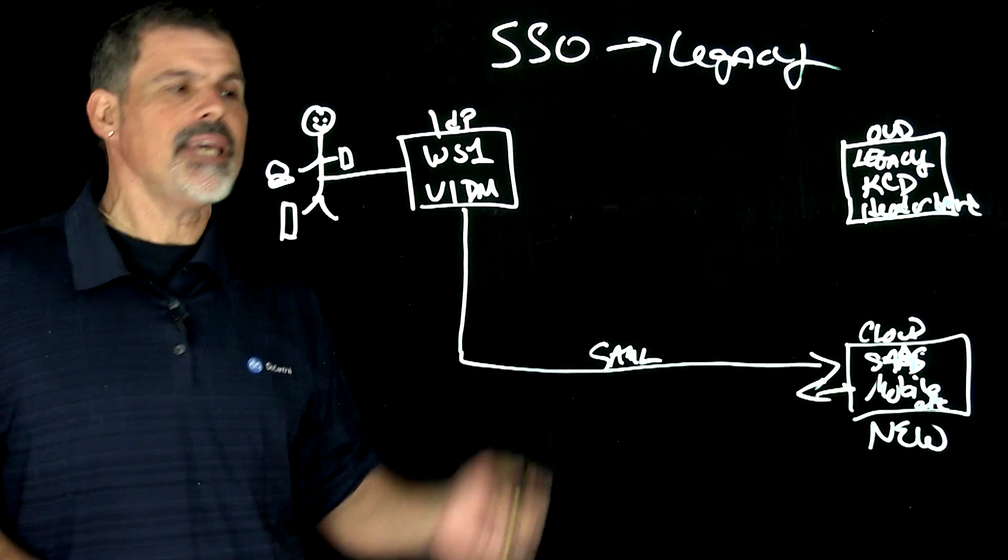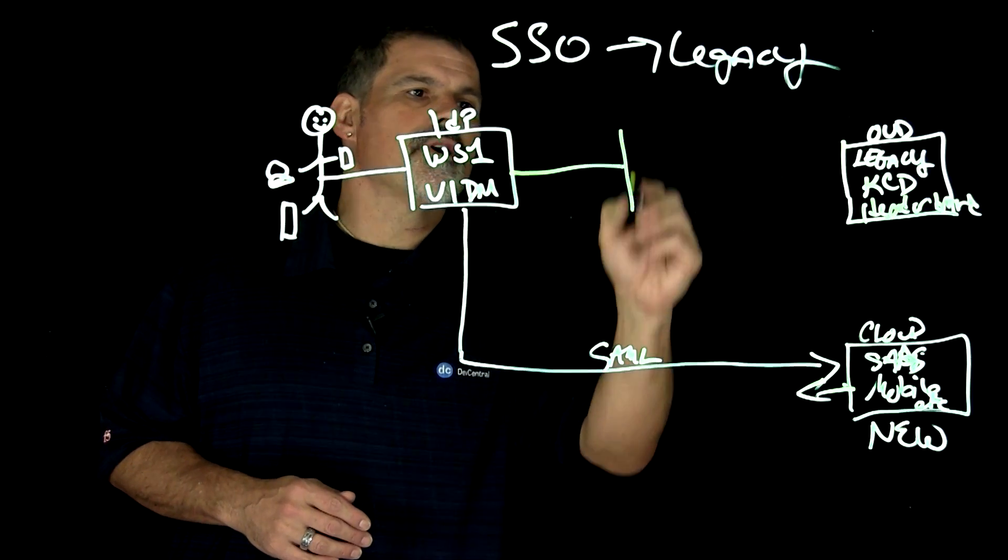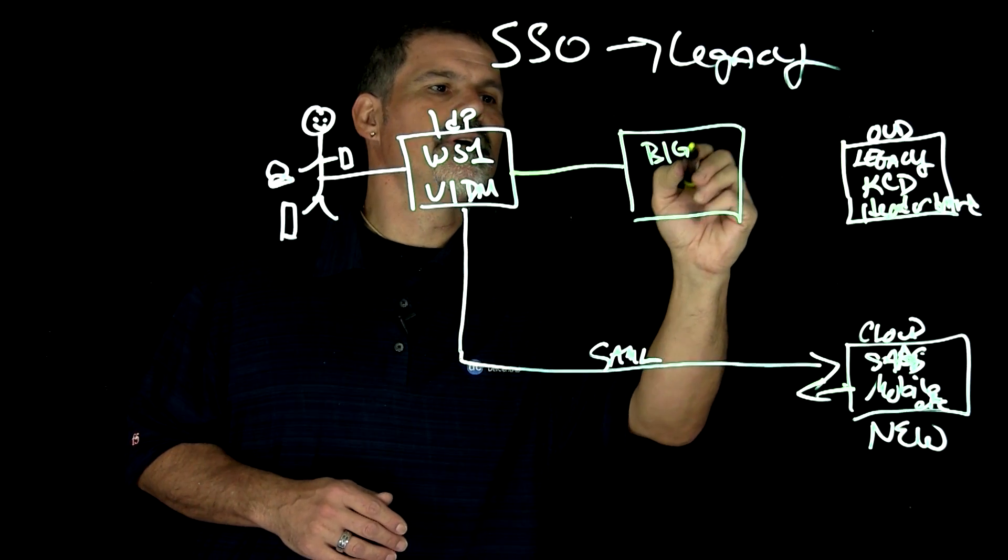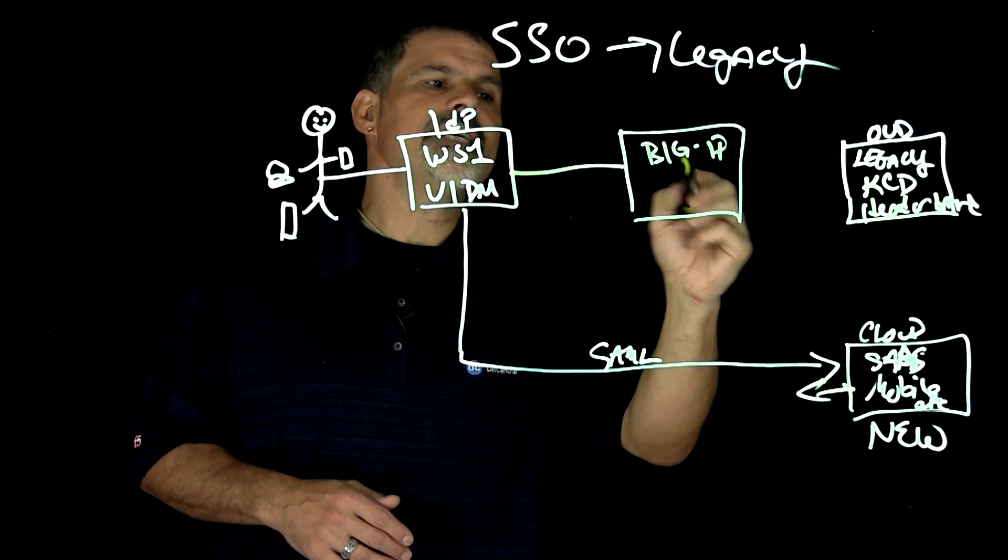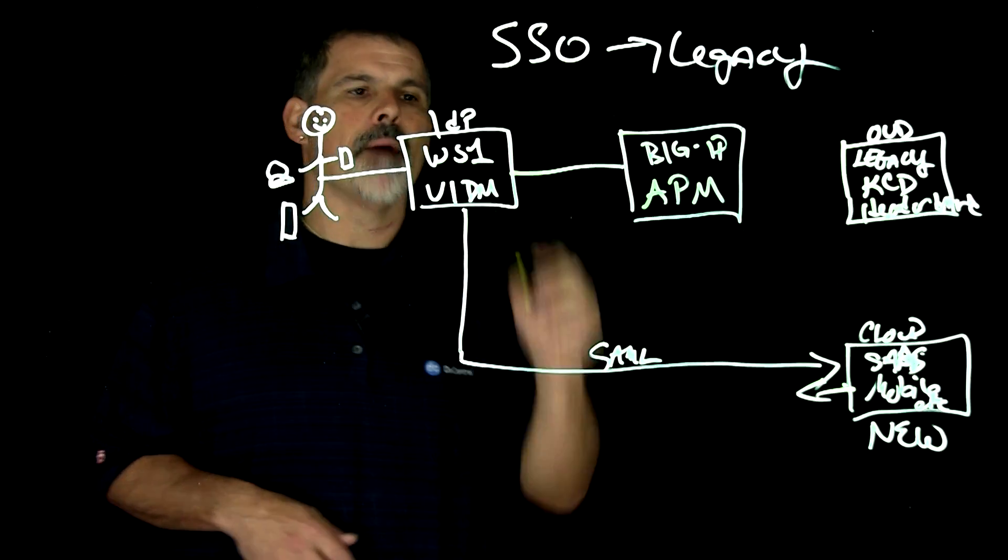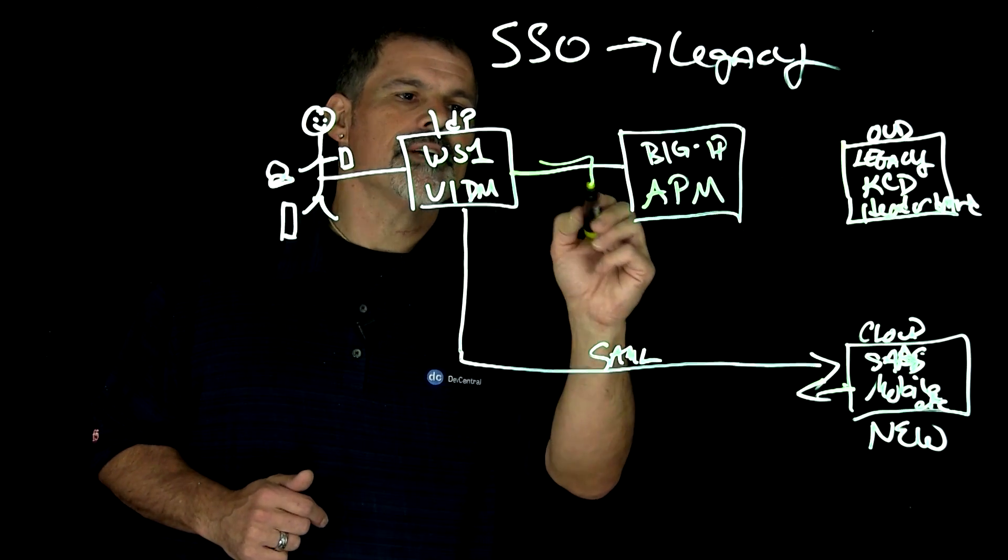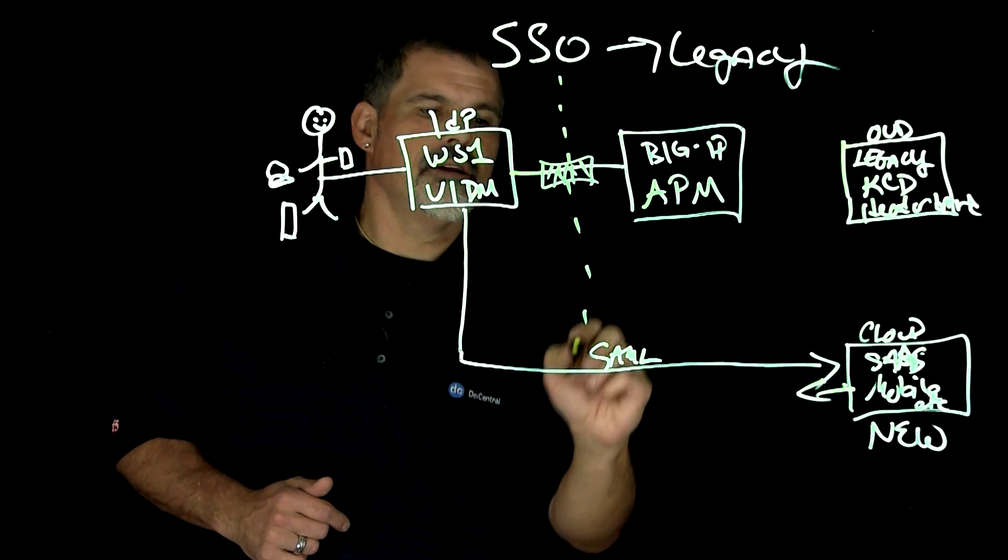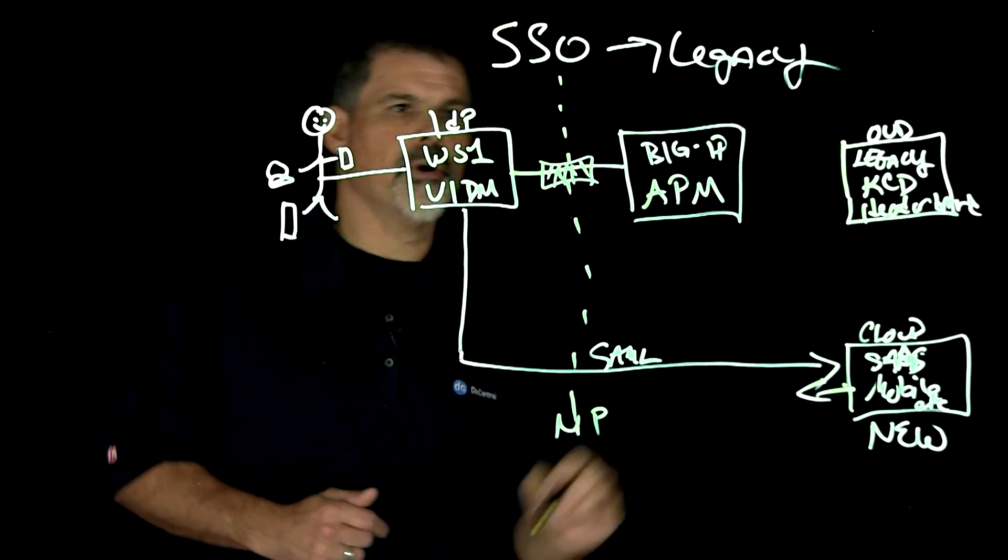Well, this is where big IP comes into play. So let's draw ourselves one of them pretty big IP. And in this instance, it's big IP access policy manager, APM. And so in this instance, let's also say this is a firewall.